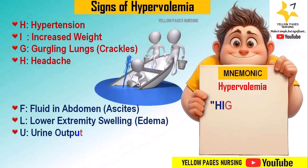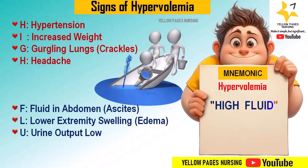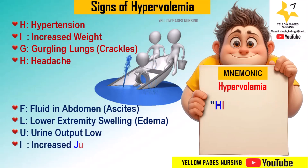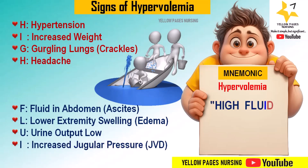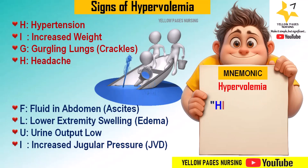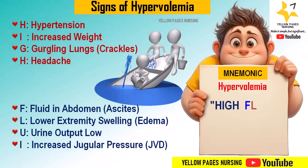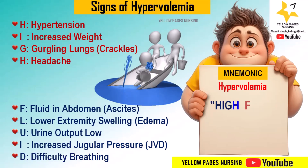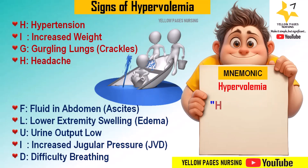U stands for urine output, which is low — the body retains fluid, leading to reduced urine production. I stands for increased jugular pressure, that is jugular venous distension, where there is visible bulging of the neck veins due to increased venous pressure.